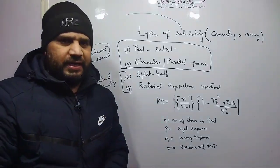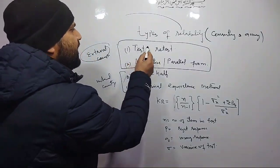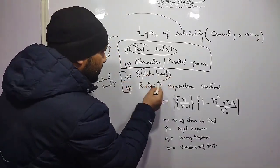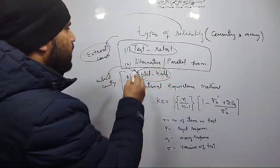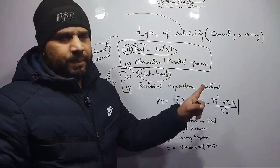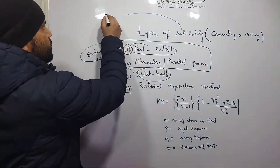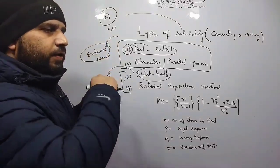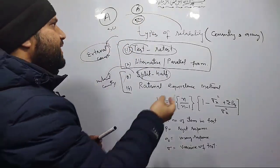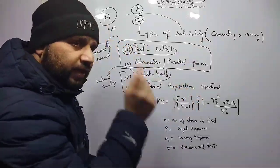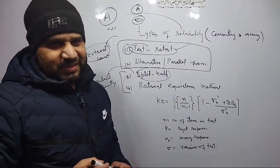Let me easily explain test-retest reliability. First I applied a test on someone and obtained a score — suppose my score was 50. Then after a gap of time, I applied the same test again on the same person and got a score of 50 again. Then I went and correlated both scores. This correlation is what we call test-retest reliability. Simple.